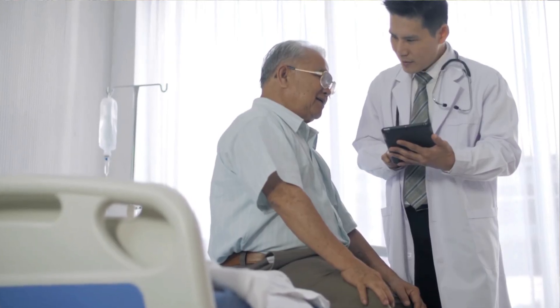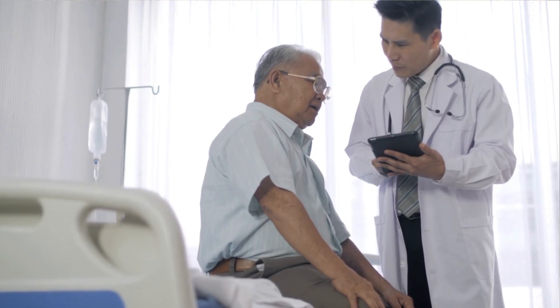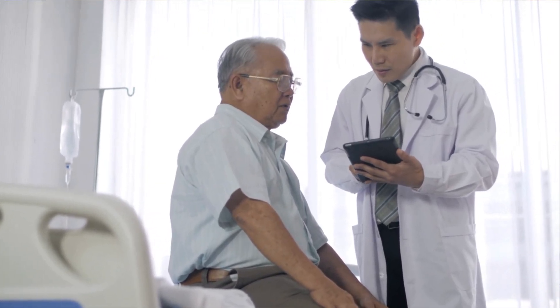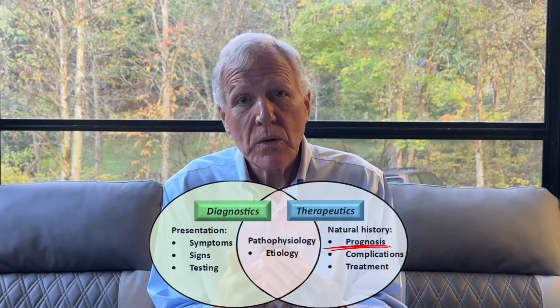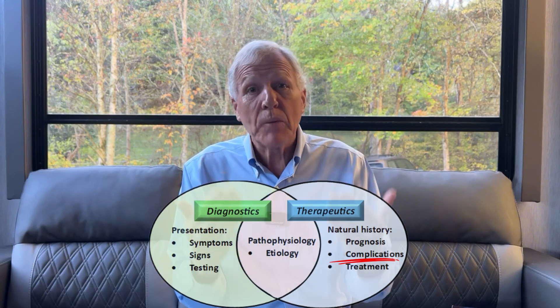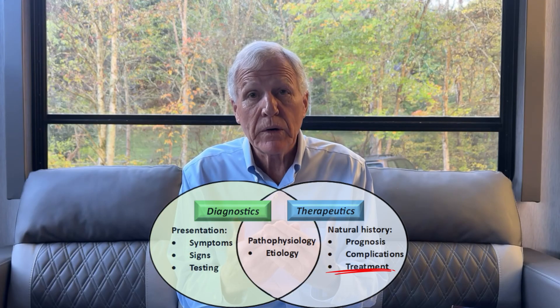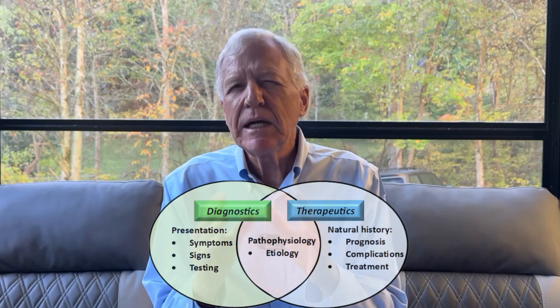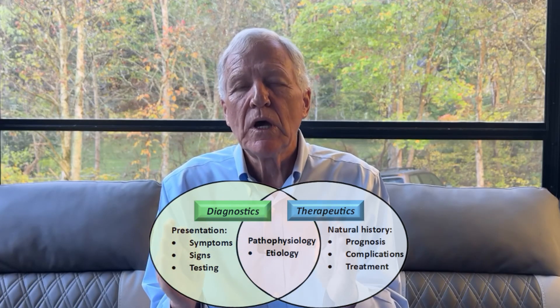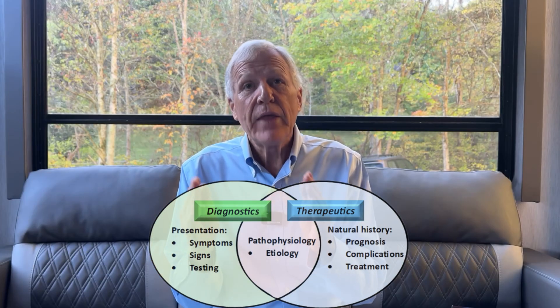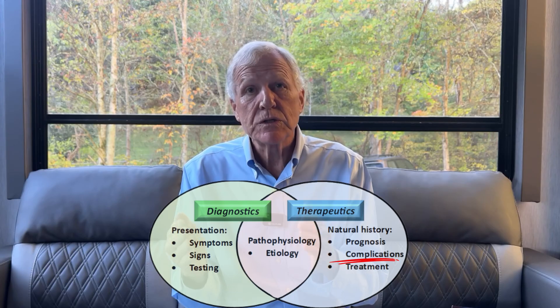Once you have a diagnosis, you flip your brain because now you're talking to your patient. He's going to say, 'What happens to me?' — and of course that's prognosis. Are there things and complications to worry about? Yes, there are complications. And last but not least, is there anything we can do about it? That's treatment — it might be surgery, it might be drugs, it might be watchful waiting. Take the neutral term: natural history. What happens if we do nothing? And that's going to be prognosis, complications, and treatment.